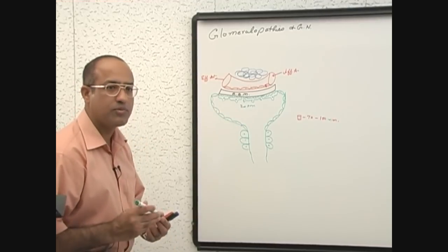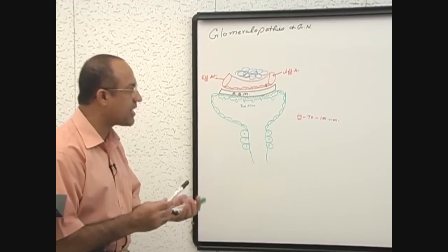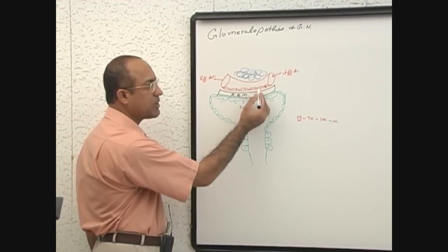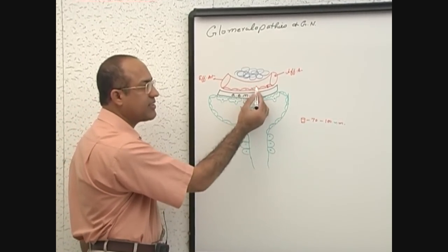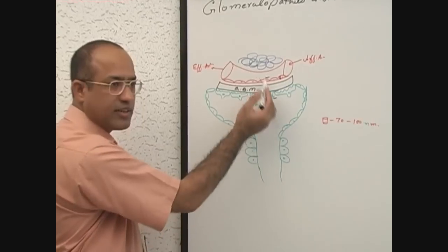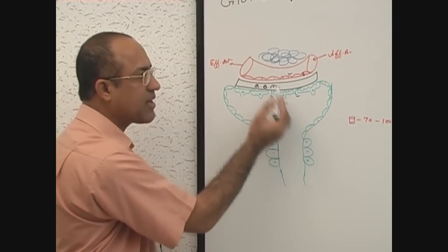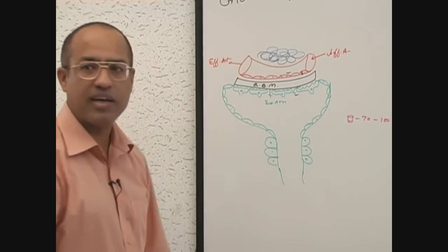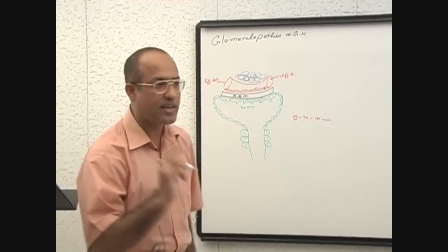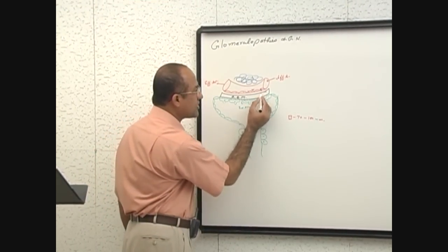There is one more mechanism which also determines the barrier to the filtration. One barrier we have discussed the size barrier. Size at this point and size at this point. So size of these pores act as a barrier for filtration. There is one more mechanism of barrier. That barrier is negative charges.